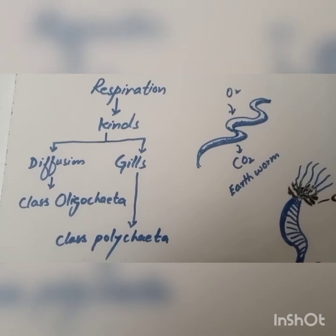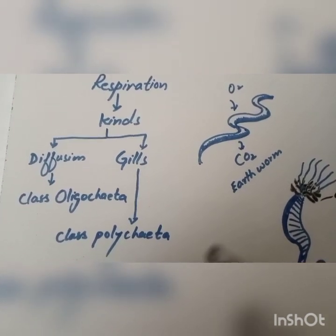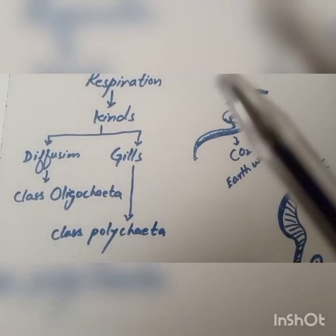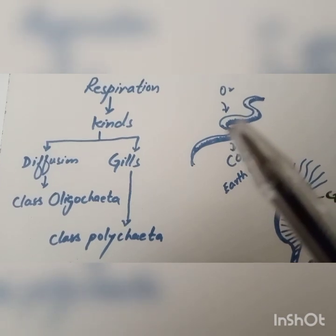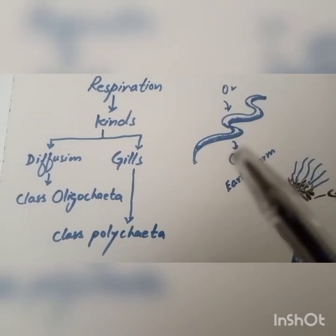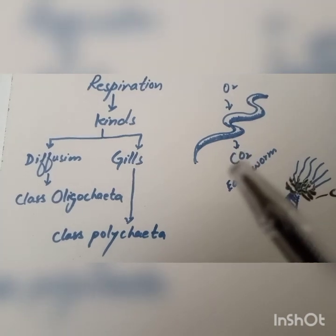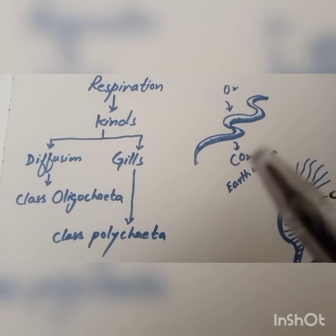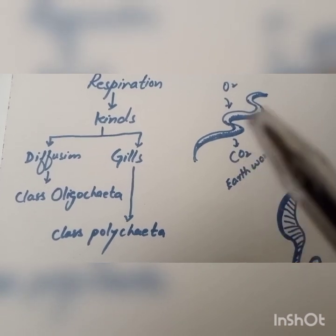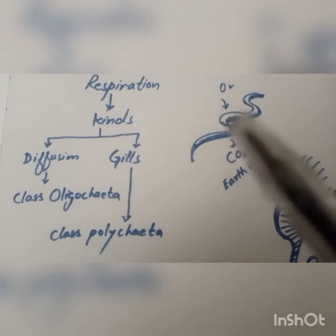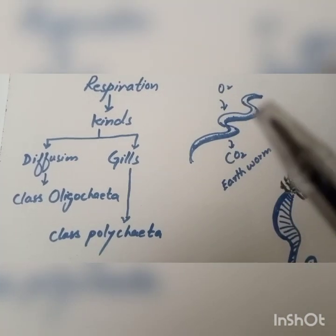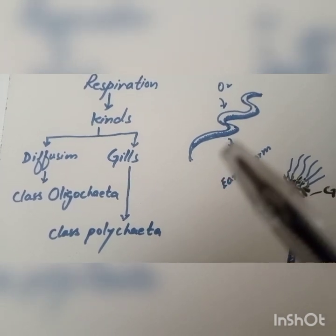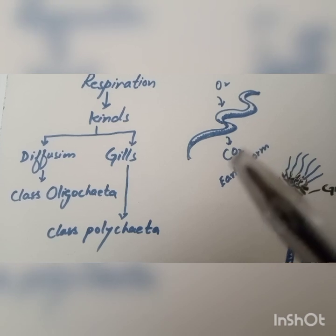Looking at the process of respiration, they get oxygen from the soil and release carbon dioxide from their skin. After getting oxygen, they exchange gases in their body through the circulatory system. Annelids have a closed type of circulatory system, so their skin needs to stay moist to absorb and release gases.